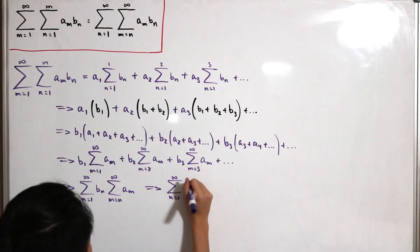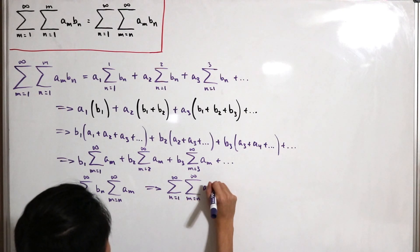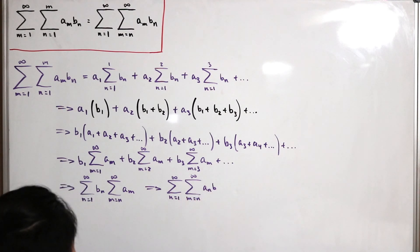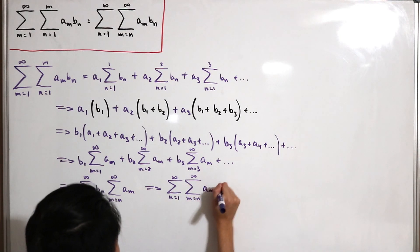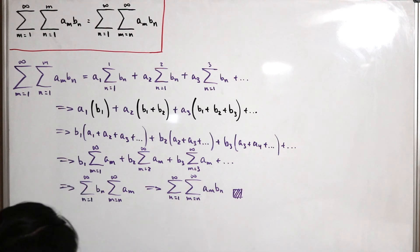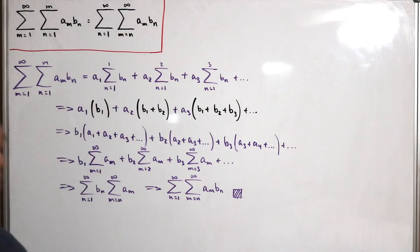So we have bn, and then we just multiply with infinity, we set that m equals n of a sub m, and so therefore we can just combine that sum together and say that we have our double sum. n equals 1, then the double sum again, so m equals n of a sub m and b sub n. And there we have it, we have what we want to achieve, the right-hand side which is over here.